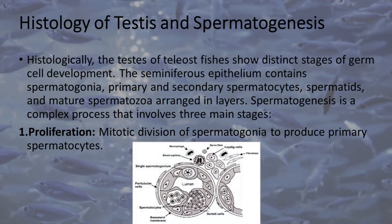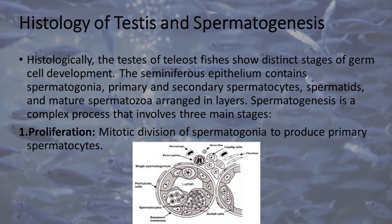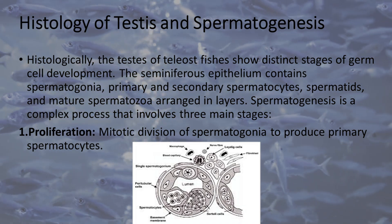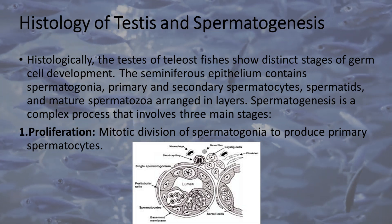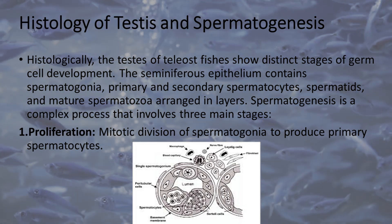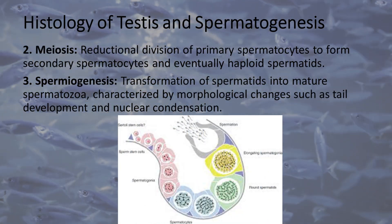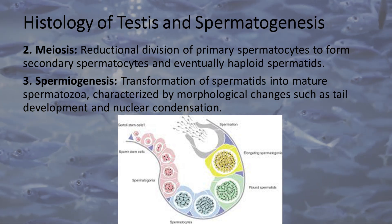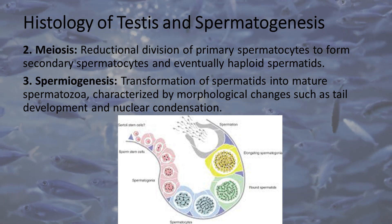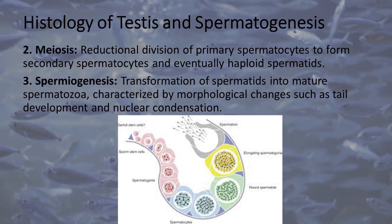Histology of Testes and Spermatogenesis. Histologically, the testes of teleost fishes show distinct stages of germ cell development. The seminiferous epithelium contains spermatogonia, primary and secondary spermatocytes, spermatids, and mature spermatozoa arranged in layers. Spermatogenesis is a complex process that involves three main stages: (1) Proliferation — mitotic division of spermatogonia to produce primary spermatocytes; (2) Meiosis — reductional division of primary spermatocytes to form secondary spermatocytes and eventually haploid spermatids; (3) Spermiogenesis — transformation of spermatids into mature spermatozoa, characterized by morphological changes such as tail development and nuclear condensation.